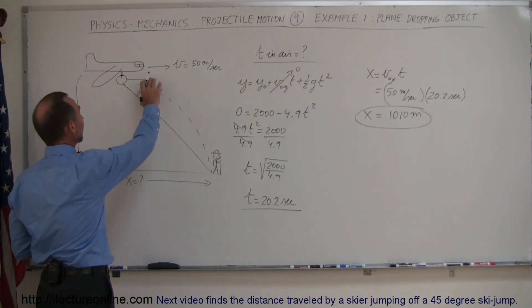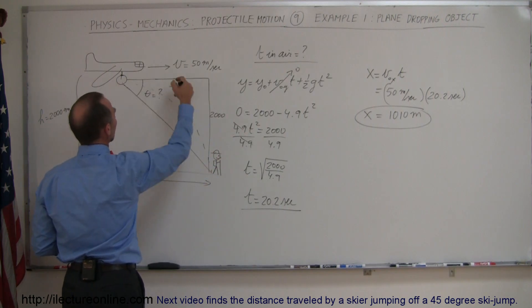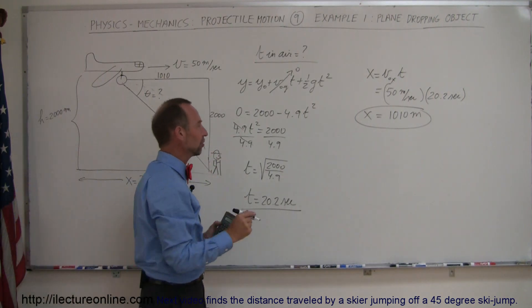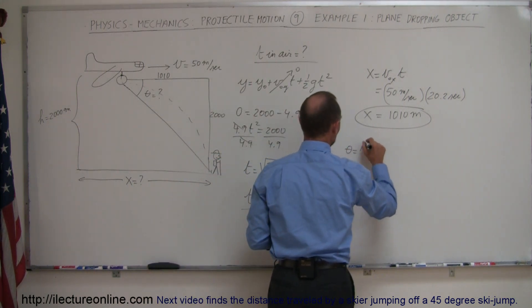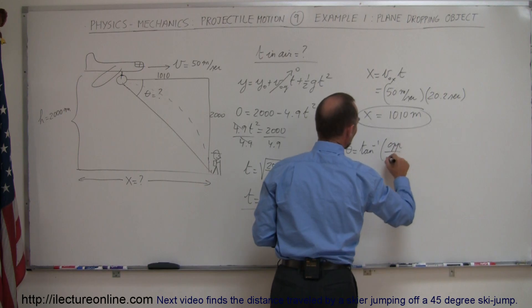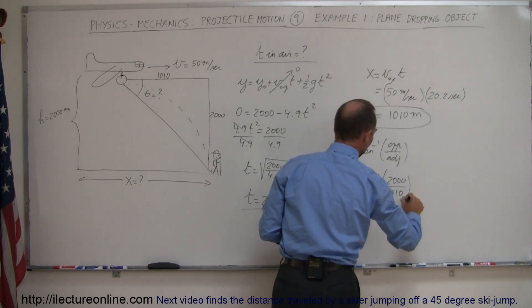And then if you want to find that angle, notice that this will be a triangle. This will be the opposite side to the triangle, which is 2,000 meters in height. The horizontal will be 1,010 meters, so we'll use the arc tangent for that. So theta equals the arc tangent of the opposite side over the adjacent side, and so in this case that will be the arc tangent of the opposite side, which is 2,000 divided by adjacent side of 1,010.